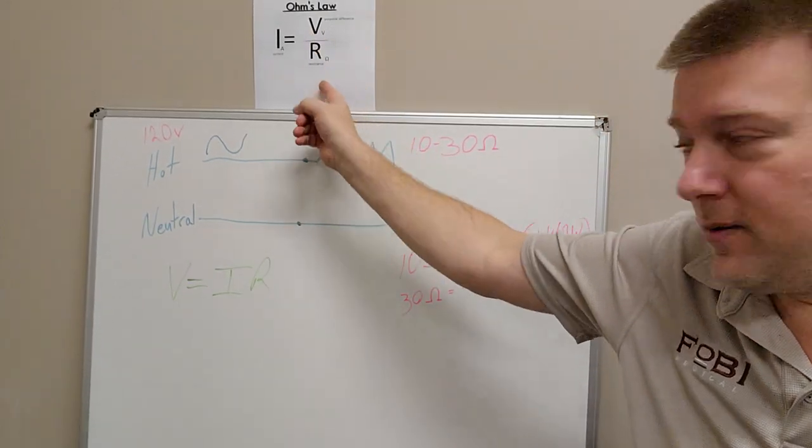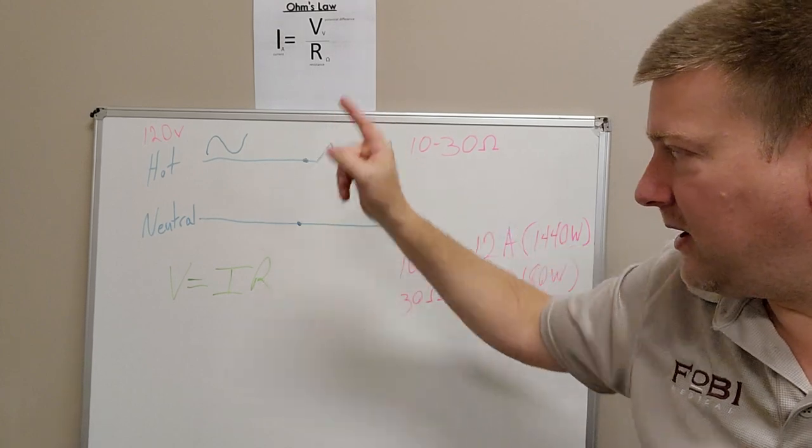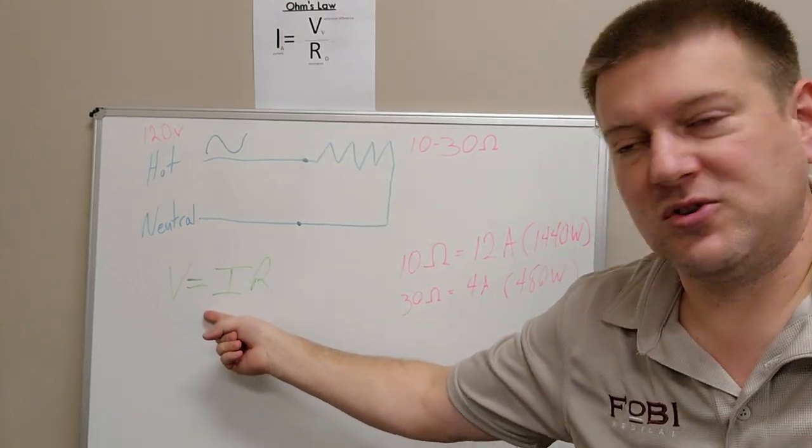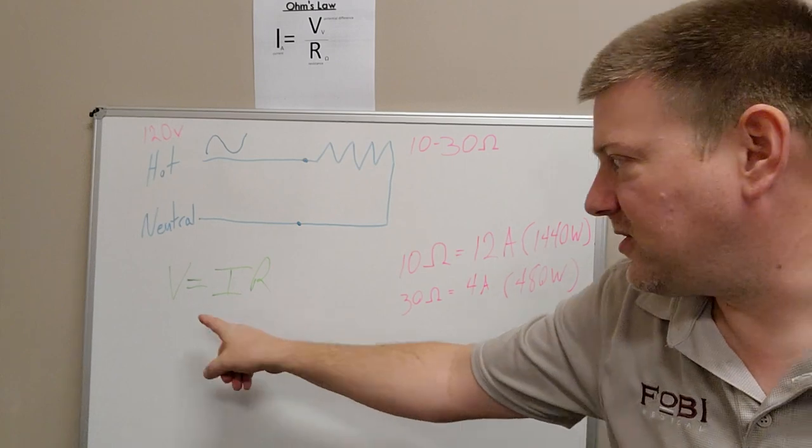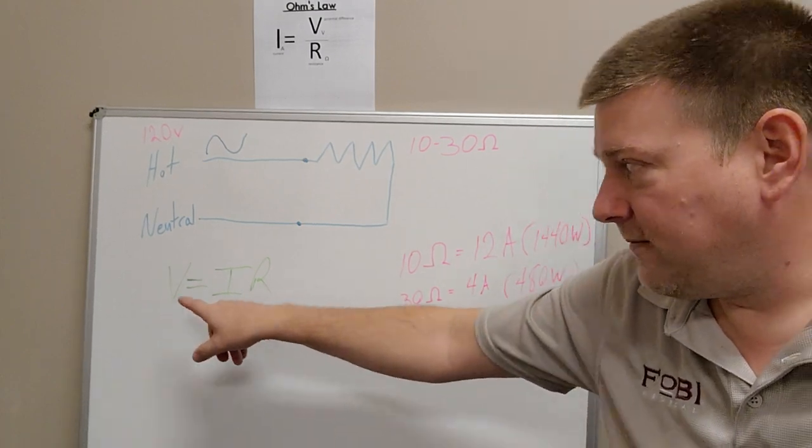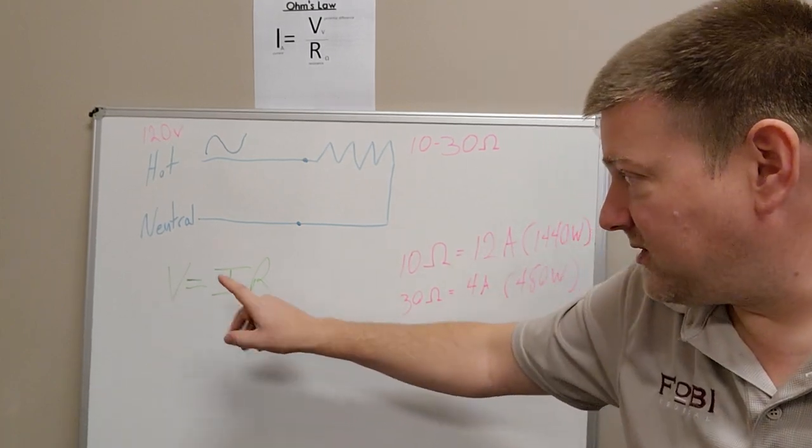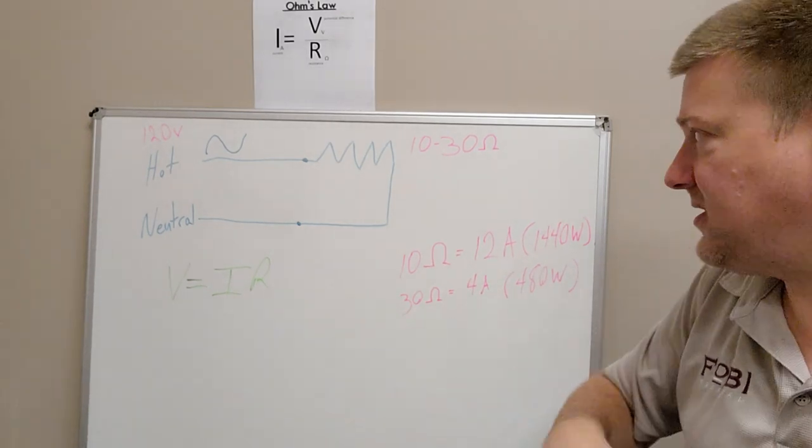Ohm's law comes into play to figure some things out. We just rearrange Ohm's law: V equals I times R, so voltage drop equals current times resistance.